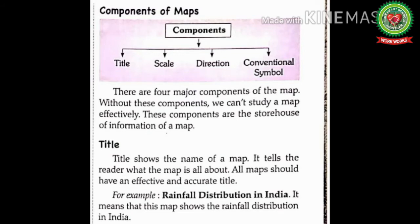The map title is very important because it describes the theme or subject of a map and gives the viewer a good idea of what the map is depicting. Title shows the name of a map — mark this line. It tells the reader what the map is all about. All maps should have an effective and accurate title; accurate means correct. For example, 'Rainfall Distribution in India' — meaning this map shows the rainfall distribution in India.